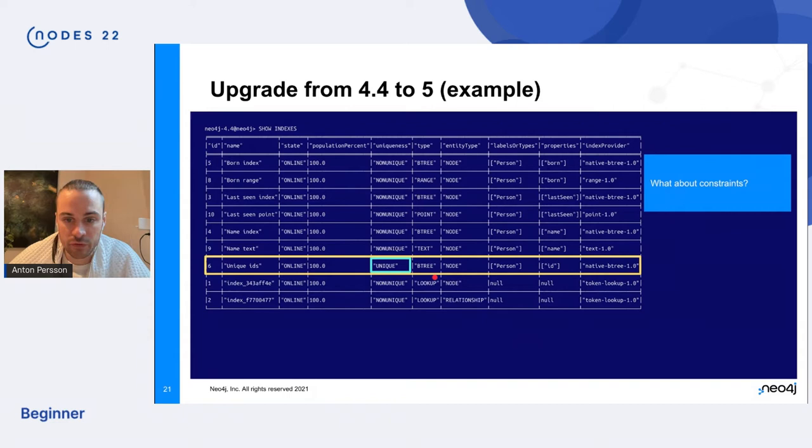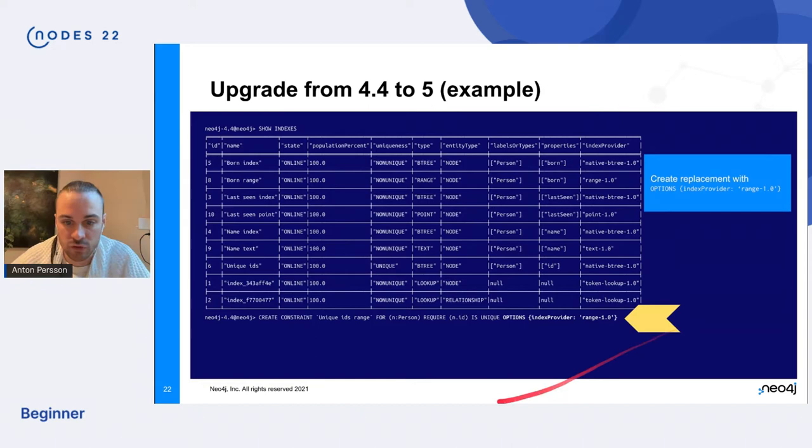We have a uniqueness constraint and in 4.4 you identify that from the show index command by in the uniqueness column here, unique. It says unique here, which means it's backing a uniqueness constraint. So in order to replace that constraints, we use the standard create constraint statement, but in the end we append options, index provider, and then the range-1.0 provider. This will create a constraint backed by a range index instead of a Btree.